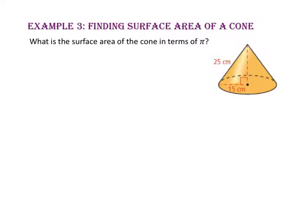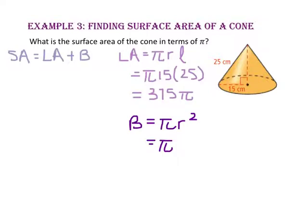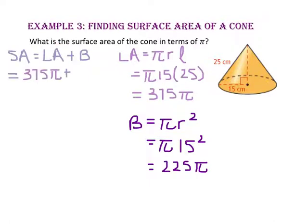In example 3, we will find the surface area of a cone. What is the surface area of the cone in terms of pi? Let's start with the formula: lateral area plus area of the base. To find the lateral area, we take pi times the radius times the slant height. Substituting 15 for the radius and 25 for the slant height, pi times 15 times 25 is 375π. The area of the base is pi times the radius squared, so pi times 15 squared is 225π. Adding 375π and 225π gives us a surface area of 600π centimeters squared.